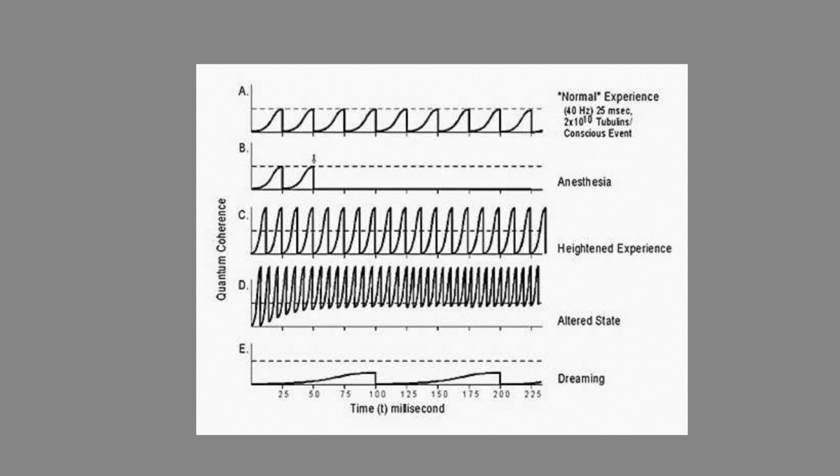Graph E suggests a dream scenario in which fewer tubulin molecules remain in superposition for longer periods, corresponding to the slower EEG frequencies characteristic of sleep, around 10 Hz or lower. This is consistent with the reduced intensity and altered nature of conscious experiences during dreaming.